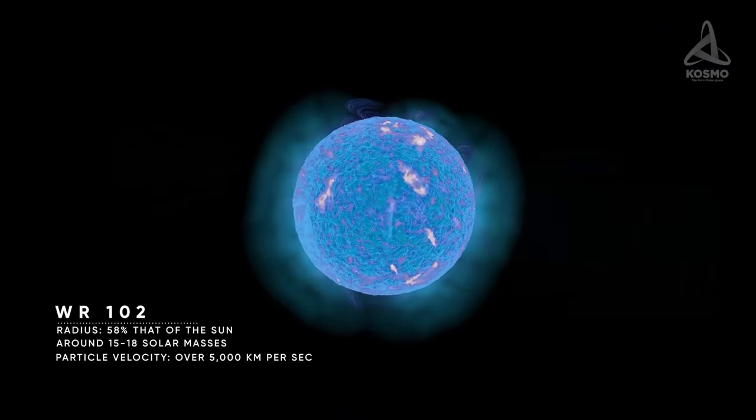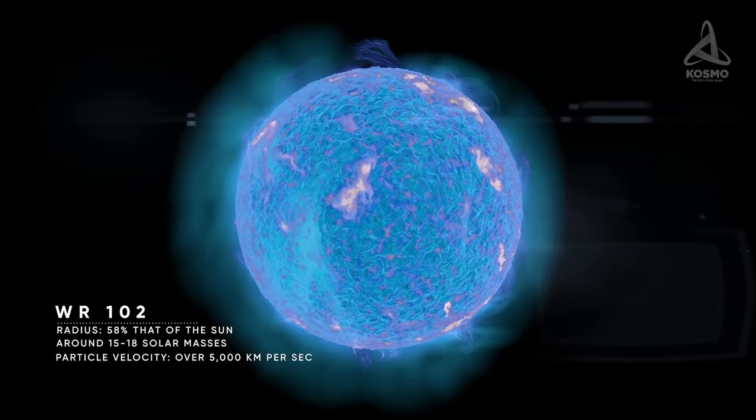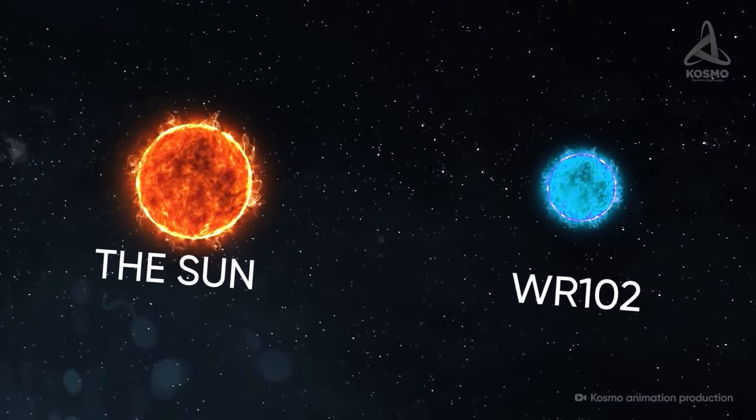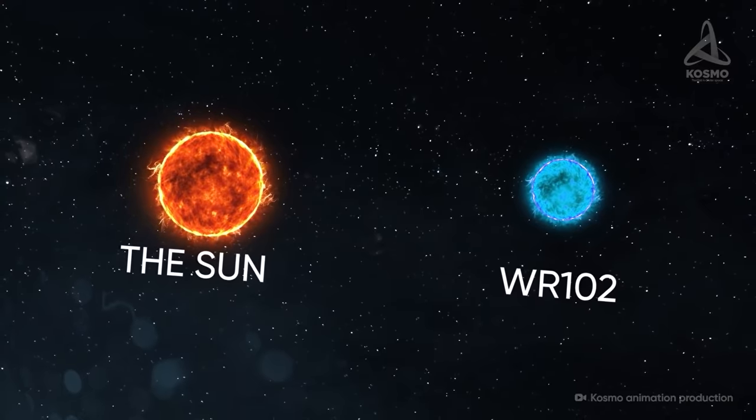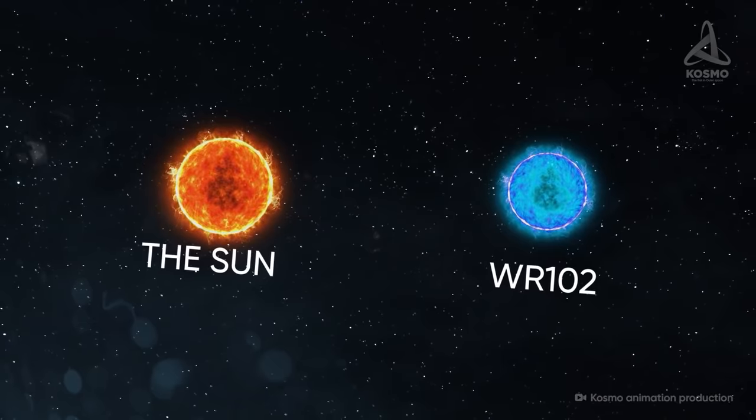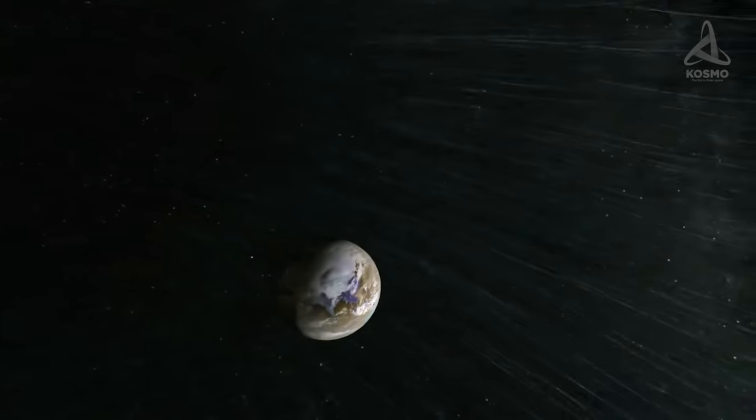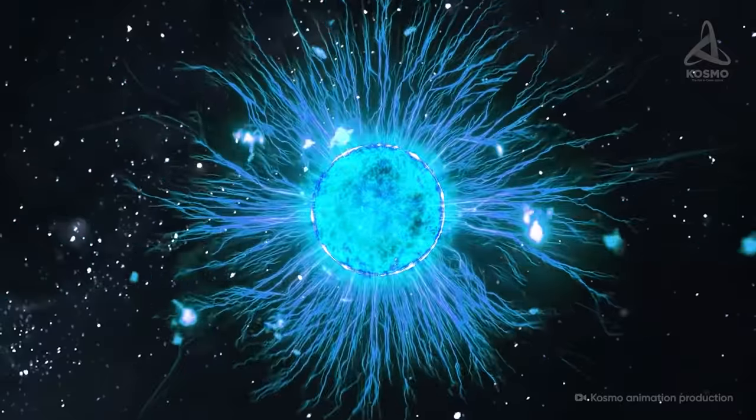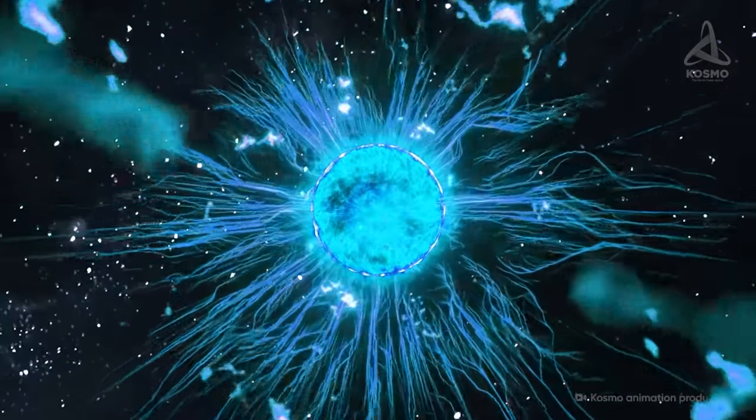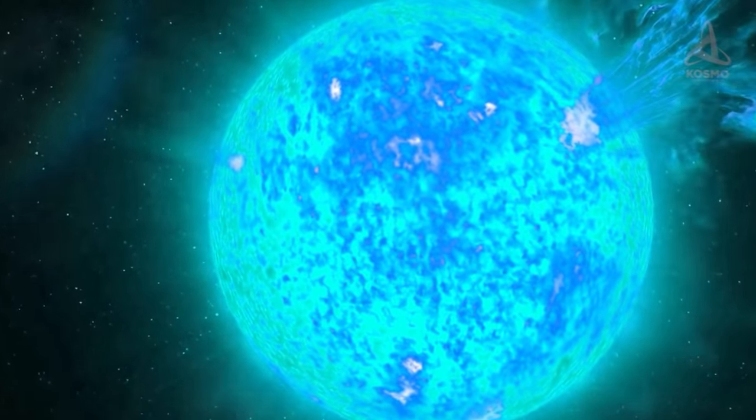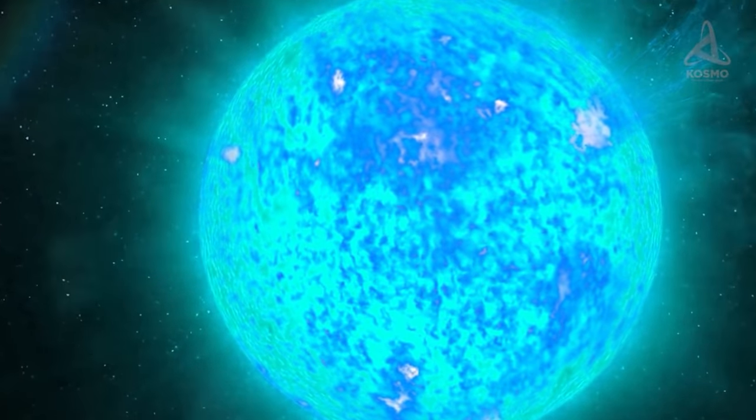Being of comparatively modest dimensions, WR102 is notably quite a dense star. With its radius measuring just 58% that of the Sun, its mass, on the other hand, is estimated at 15 to 18 solar masses. On its birth, it is thought to have been as heavy as 40 to 60 solar masses. Still, the high temperature and robust chemical reactions in the star's interior cause an exceptionally powerful stellar wind, whose particles' velocity is over 5000 kilometers per second. It takes WR102 just a few months to lose one Earth mass worth of material on account of its stellar wind. At this rate of particle emission, the star is going to lose one sun mass worth of material in the course of 10,000 years.